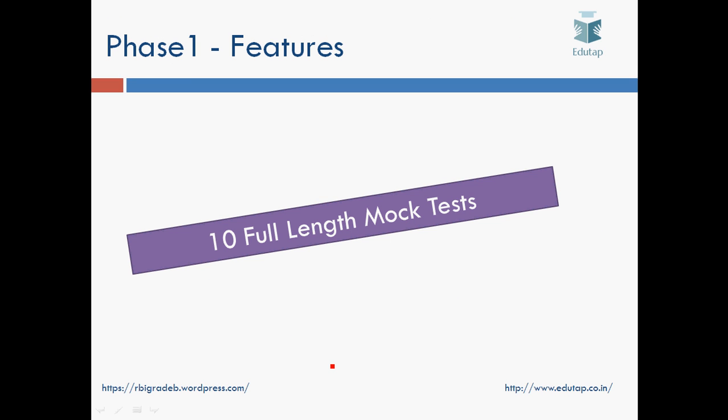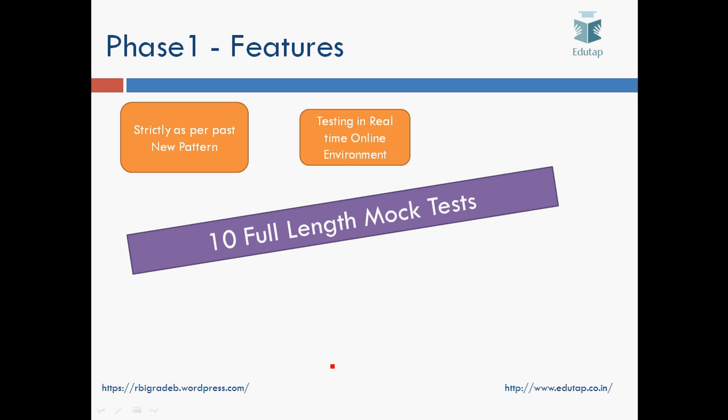What is the coverage by EduTap for the Grade A course? We have fully comprehensive coverage for Grade A, consisting of Phase 1, Paper 1 of Phase 2 which is ESI and ARD, and Paper 2 of Phase 2 which is English. For Phase 1, we are offering 10 full-length mock tests strictly as per the new pattern, where they have increased the weightage of ESI and ARD from 25 to 40 questions each, reduced the weightage of Quant from 30 to 20, and reduced the weightage of Reasoning from 40 to 20. Our tests will be in a real-time environment and on varied difficulty levels so as to prepare you for different scenarios.